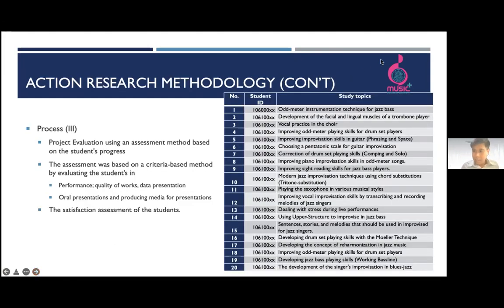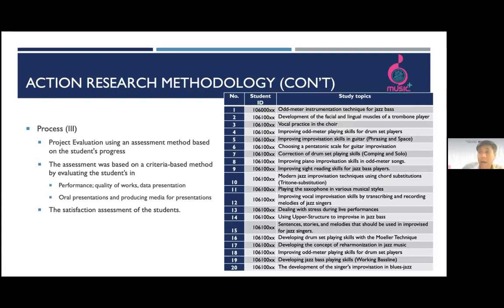As you can see, these are all of the students' study topics. There are 20 students and 20 study topics. The overall topics are focused on three main subject areas: one is the development process of musical technique; number two is composing and transcribing music — transcription, licks of jazz — to improve improvisation skills; and the last one is solving problems of musical and ensemble issues.